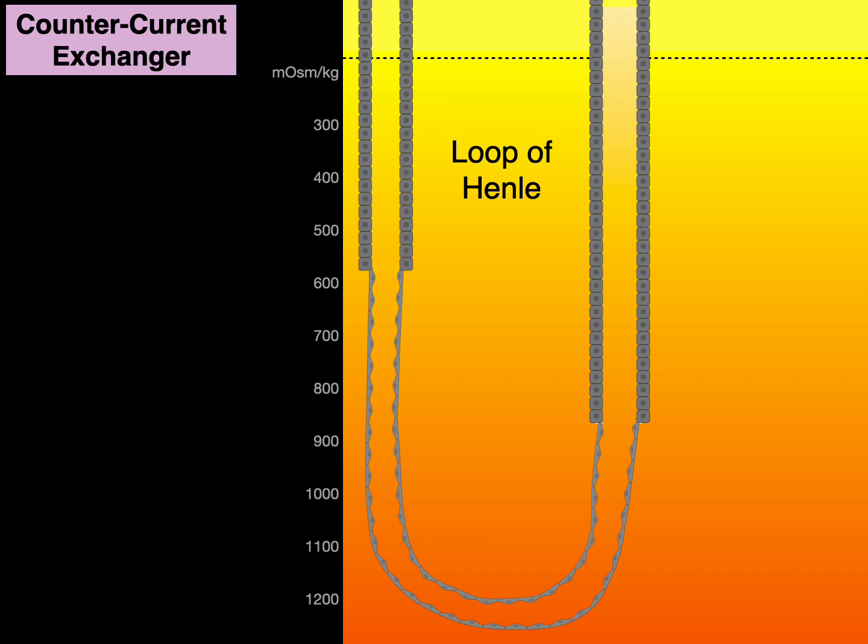The loop of Henle, as shown in this illustration, has a descending thin limb, hence simple squamous cells, and a thick ascending limb, hence the more cuboidal cells. So tubular fluid goes down the descending thin limbs and then up the thick ascending limb.